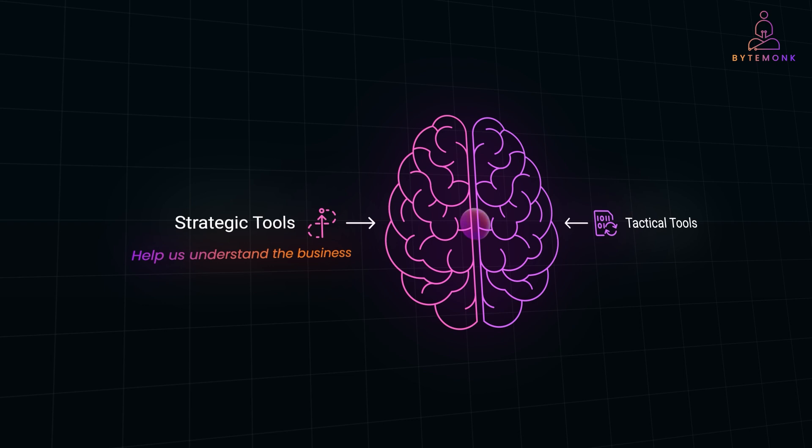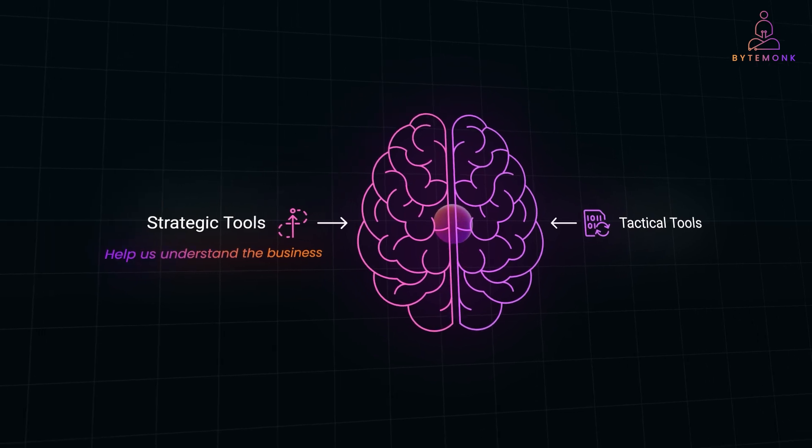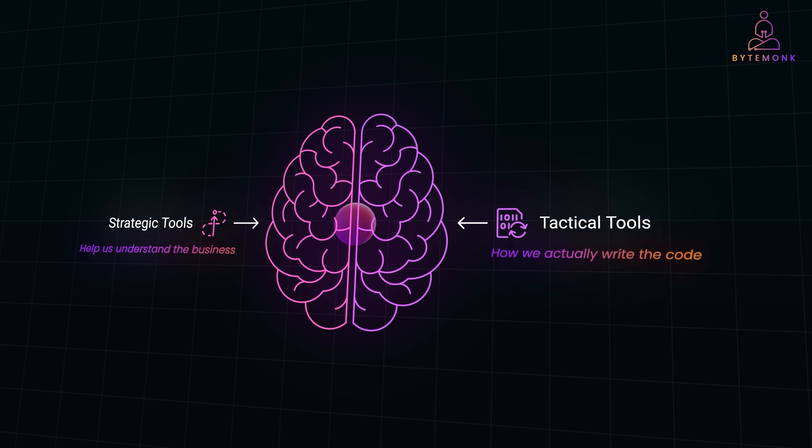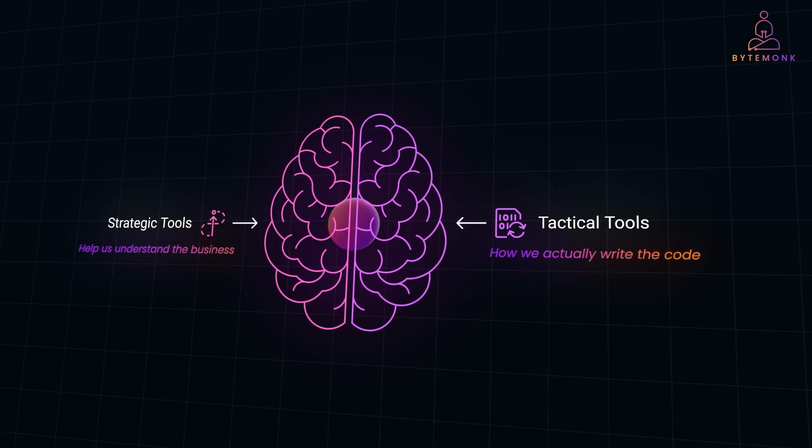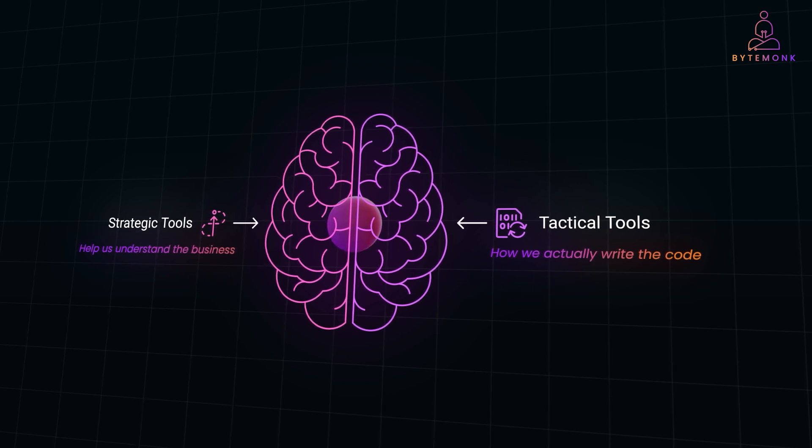These tools also guide high-level design decisions, like how to break down the system into smaller manageable parts. Tactical tools focus on how we actually write the code. They help us express the business logic in a way that's clear, concise, and understandable. Even to someone who doesn't know a single line of code.